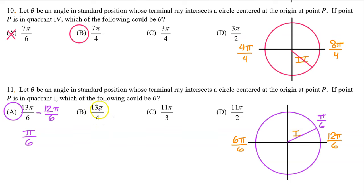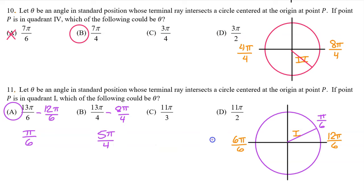Let's subtract 2pi from 13pi over 4 to see where this one would land. 2pi is the same as 8pi over 4. If you subtract 8pi over 4 from 13pi over 4, you get 5pi over 4. Right here at pi we could think of as 4pi over 4, so 5pi over 4 would land right here in the third quadrant. Therefore 13pi over 4 will also land right here in quadrant 3. That was just good practice.